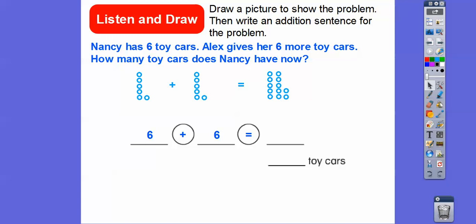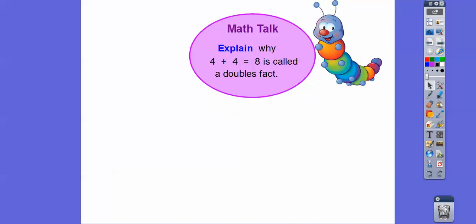Five plus five is ten, plus two more is twelve. Well, we know six plus six equals twelve, so Nancy has twelve toy cars now. Oh boy, I used to play with those a lot.